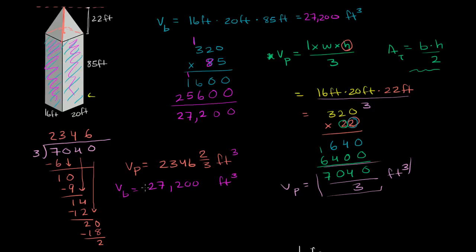These are both in cubic feet. And then we can add them together. So you're definitely going to have the 2 thirds there. You're going to have the 2 thirds. 6 plus 0 is 6. 4 plus 0 is 4. 3 plus 2 is 5.